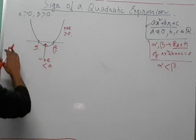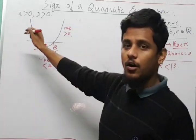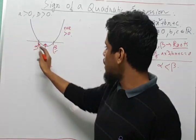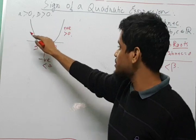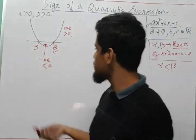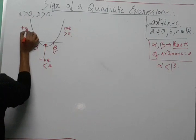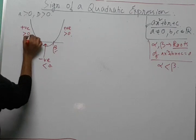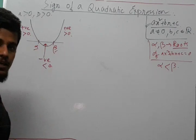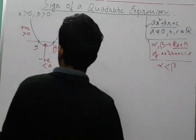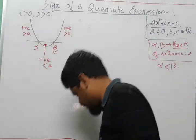If x is lying to the left of alpha, then we can see that the quadratic expression is positive again — greater than 0. So this is the first condition that we have checked and explained.